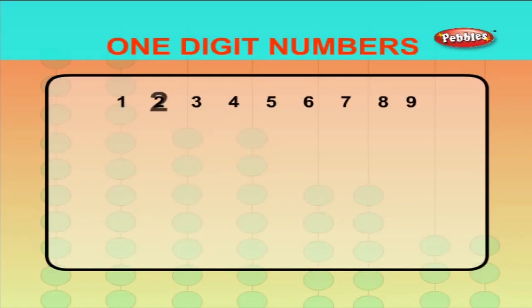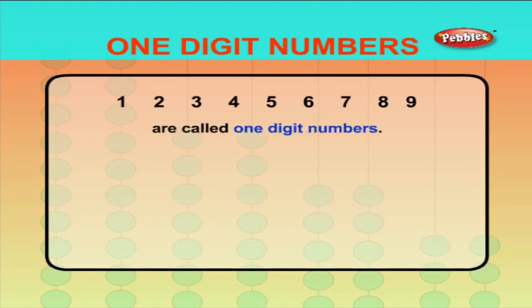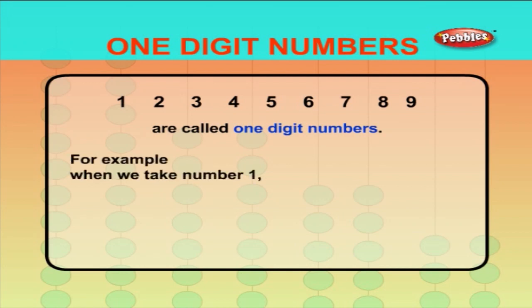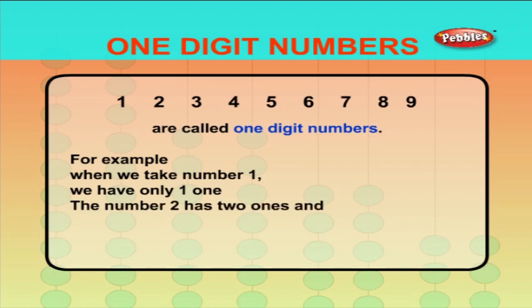One, two, three, four, five, six, seven, eight, and nine are called one-digit numbers. For example, when we take number one, we have only one one. The number two has two ones. And the number five has only five ones.